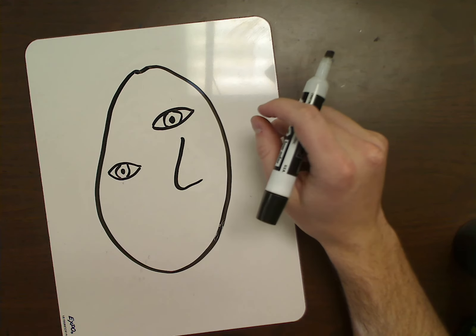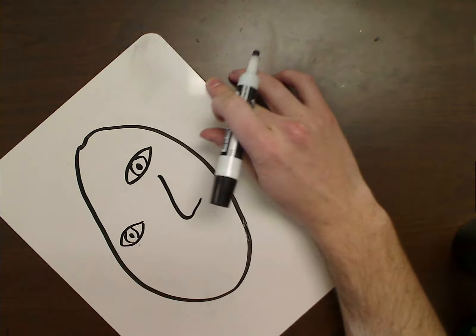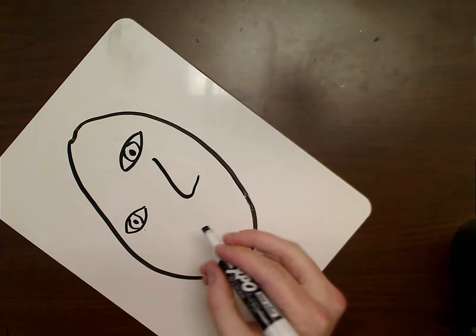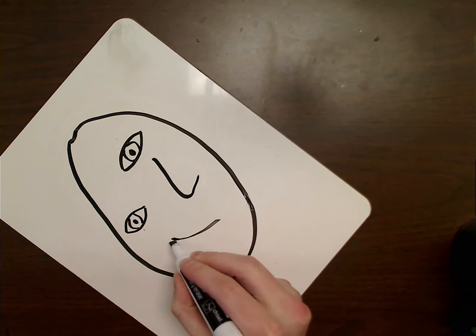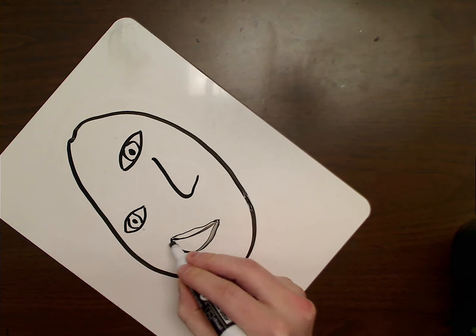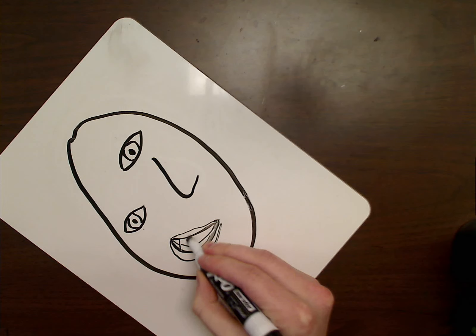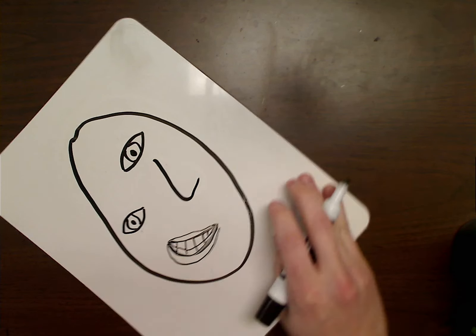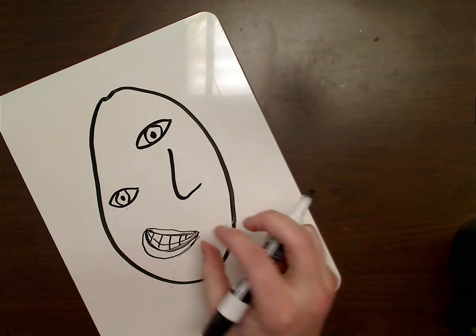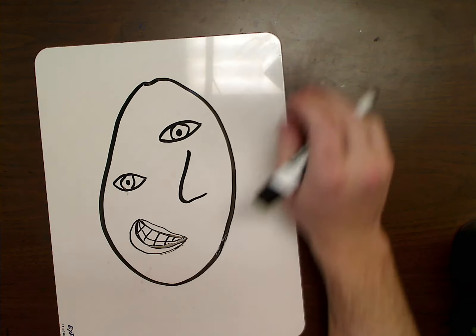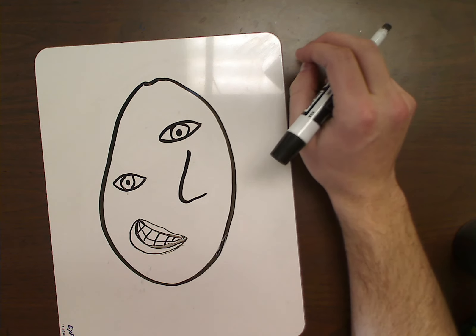Next step, we'll want to add a mouth. Again, this could be anywhere. I'm going to make mine sideways here. Give a great big smile. There we go. Now I've got a mouth. I've got a nose. I've got some eyes.